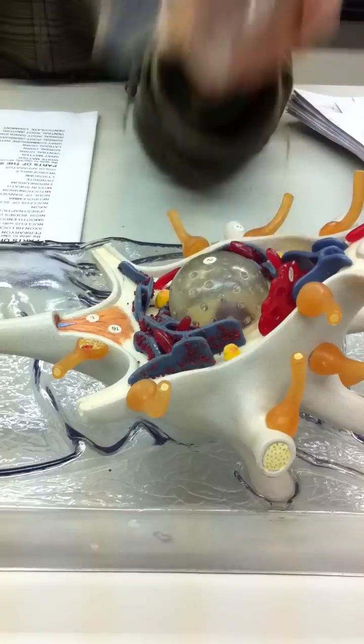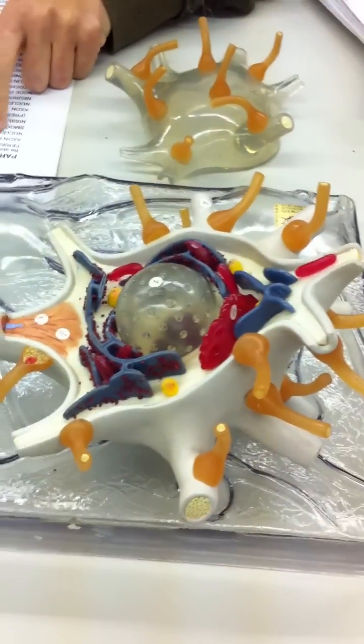This whole area is your cell body, minus all the projections coming off of it. It can also be called the perikaryon or soma.